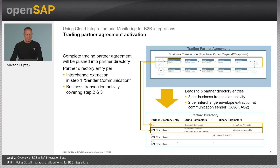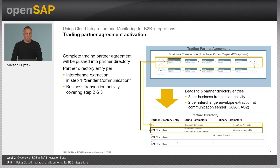In this depiction, a business transaction activity — for example a purchase order request sent to a trading partner — holds one integration agreement process leading to five partner directory entries: three per business transaction activity (for example for a purchase order request) and two interchange envelope extractions at the communication layer such as SOAP or AS2. Each partner directory entry has a PID with exposed binary parameters as well as string parameters.